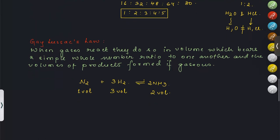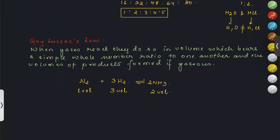Using realistic volumes: if we take 20 ml of N₂, we need 60 ml of H₂ (three times the volume), and 40 ml of NH₃ will be formed (two times the N₂ volume). Another example: H₂ + Cl₂ → 2HCl. If given 50 ml of H₂ and 100 ml of Cl₂, since the reaction ratio is 1:1, only 50 ml of H₂ reacts with 50 ml of Cl₂ to form 100 ml of HCl.